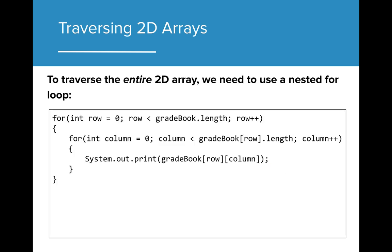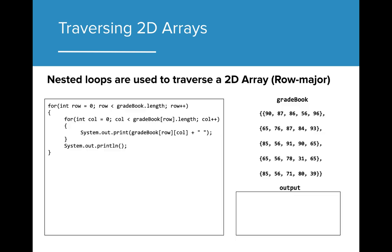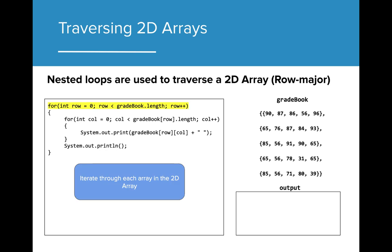The former two traversals only produced output for a specific column or row. We can also traverse the entire 2D array by using a nested loop. We can take the initial traversal used to access exam 1 scores and make it a nested loop to access all values in the 2D array. The outer for loop iterates through each array in the 2D array, while the inner for loop iterates through each value in the current array.